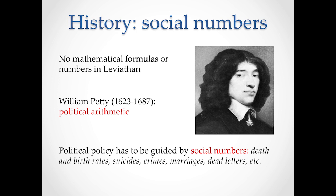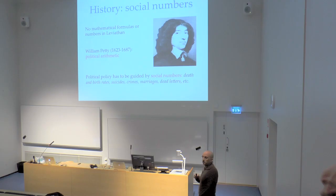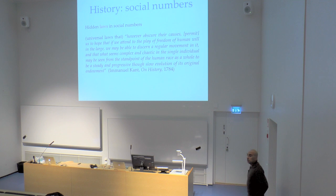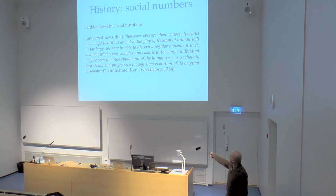The social numbers available at that time included death and birth rates, suicides, crimes, marriages, and dead letters — those you send that never reach their destination. Italy was famously bad at this. The idea was that there were some hidden laws in these social numbers: once you start playing with them, there was a sense of order behind them.